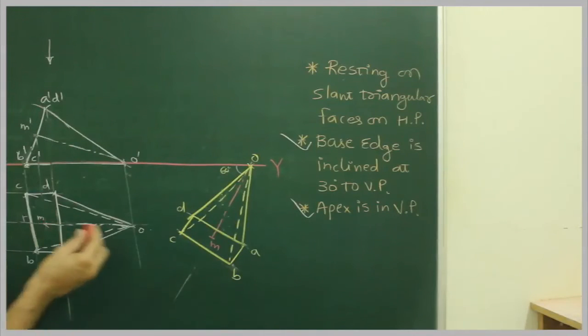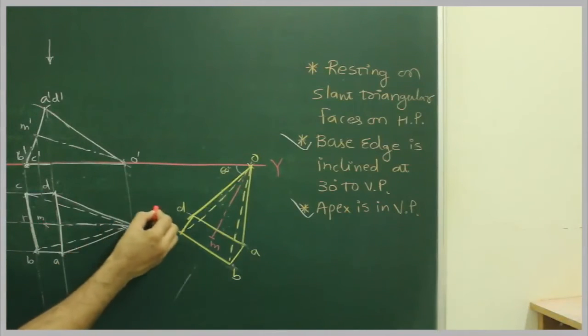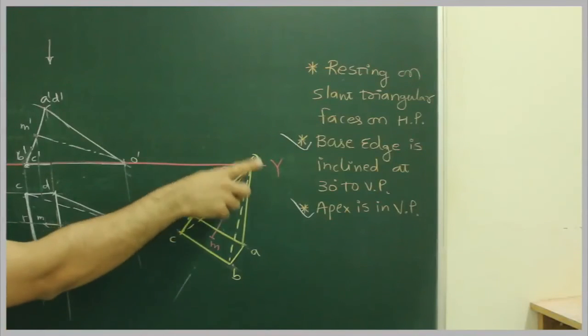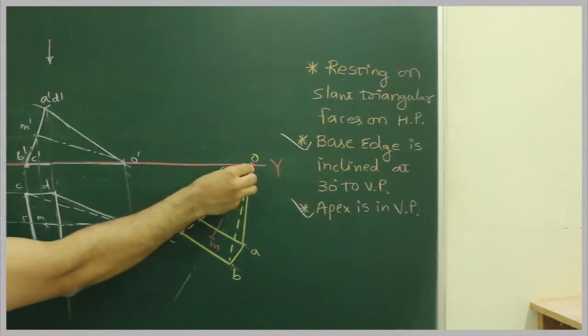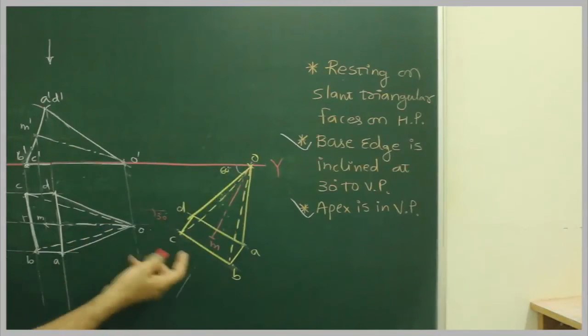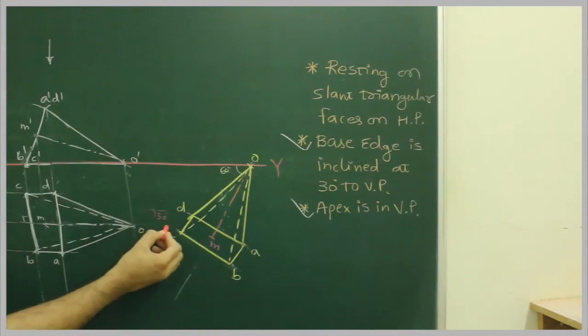See this. So now if you extend BC and if you find out, then it will be 30 degree. So what we did? Since we had to satisfy two conditions, we took Apex O on XY line and we took 60 degree. And we have drawn this as it is. So we got BC inclined at 30 degree.